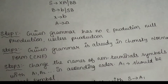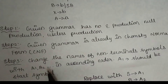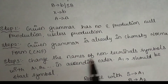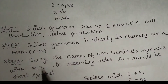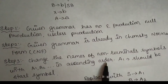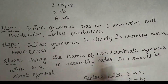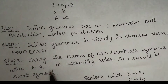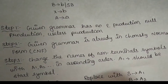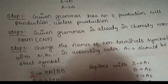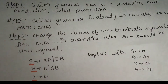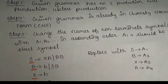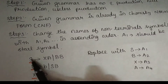The third step is to change the names of the non-terminal symbols to A1, A2, and so on in ascending order. A1 should be the start symbol. The productions have all non-terminal symbols, which are capital letter symbols.